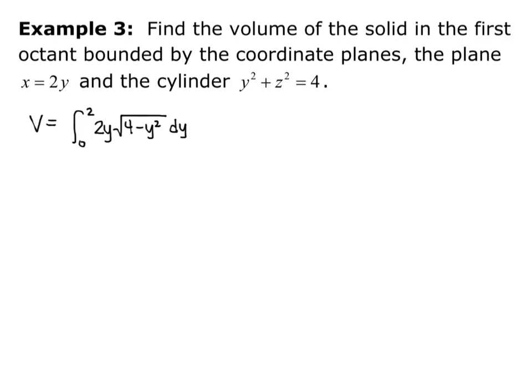So our u substitution is going to be u equals 4 minus y squared, so the entire expression that's under the radical. du equals negative 2y dy. So solving for the 2y dy, which is what I want to replace, I get negative du equals 2y dy.